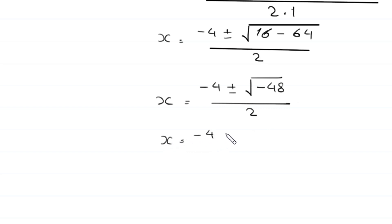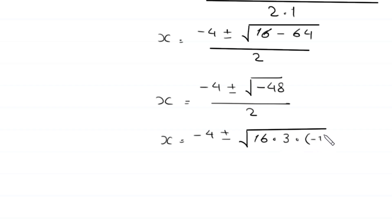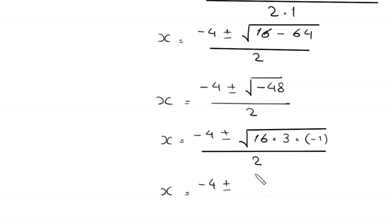So x equals negative 4 plus or minus the square root of negative 48. This negative 48 can be written as 16 times 3 times negative 1, divided by 2. Therefore x equals negative 4 plus or minus 4 times the square root of 3 times the square root of negative 1, which is i, divided by 2.